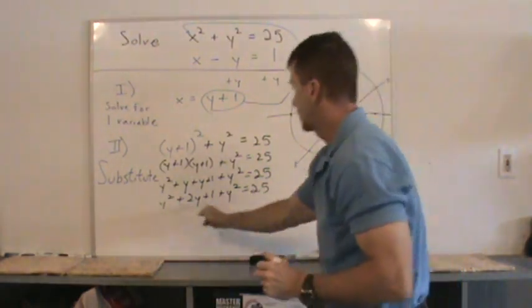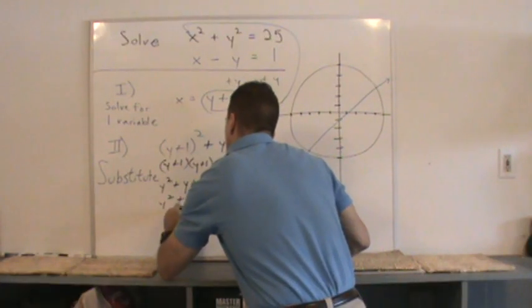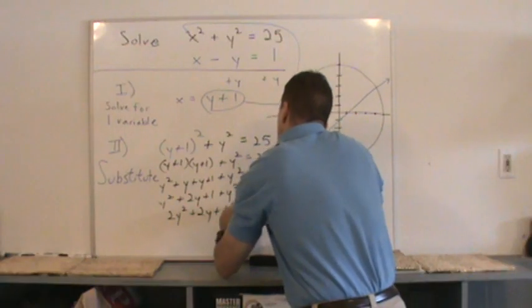We are going to combine like terms. You have y squared plus y squared is 2y squared plus 2y plus 1 equals 25.